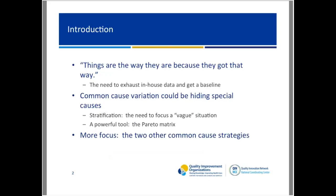People resist change and do not like a disturbance in their daily work routine. I'll also show you the need to exhaust your in-house data and whenever possible get a baseline. Wisdom from the Juran Institute has shown that many projects fail because of lack of a good baseline estimate of a problem. Common cause variation could be hiding special causes. I've already introduced you to stratification, and I'm going to give you a very powerful tool — the Pareto matrix.